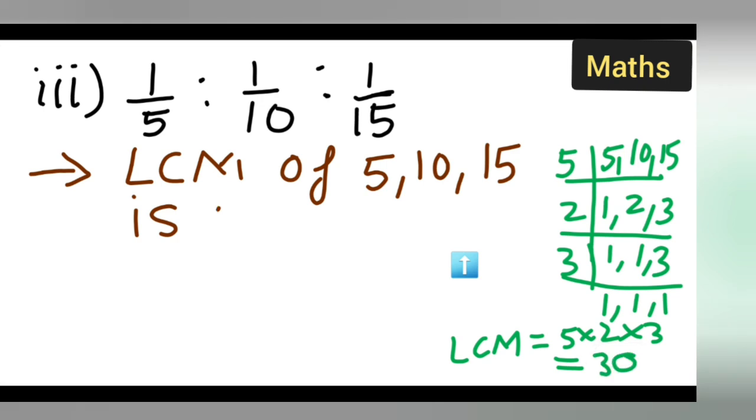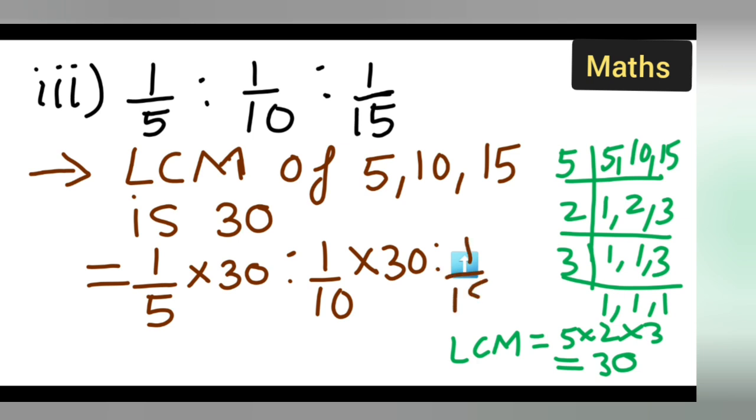So you will have to write down the LCM to be 30. Next thing, take down: 1 upon 5 multiplied by 30 ratio 1 upon 10 multiplied by 30 ratio 1 upon 15 multiplied by 30.